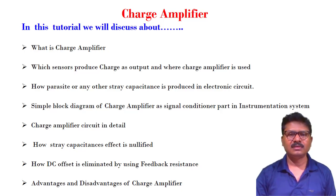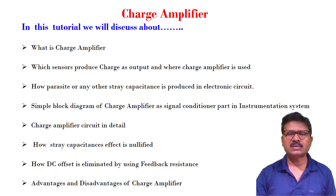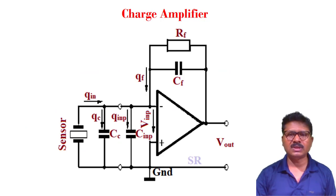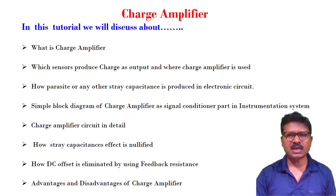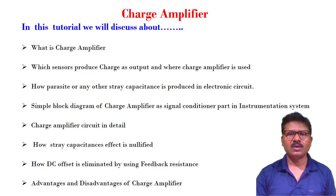Welcome to this tutorial. In this tutorial we will discuss about the charge amplifier: what is a charge amplifier, what are the different sensors which produce charge as output, and where the charge amplifier is normally used. We will discuss how parasite capacitance is produced, a simple block diagram of the charge amplifier circuit as a signal conditioner, the detailed charge amplifier circuit, how stray capacitance effect is nullified, how DC offset is eliminated using feedback resistance, and the advantages and disadvantages of the charge amplifier circuit.